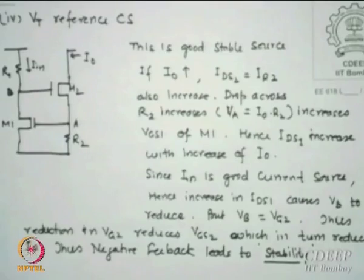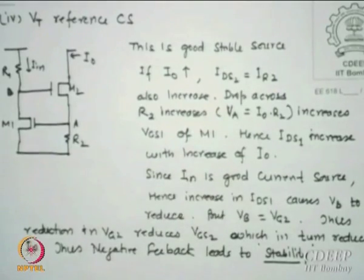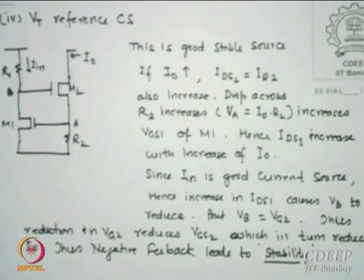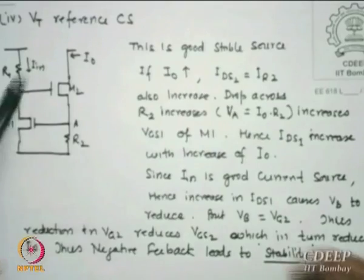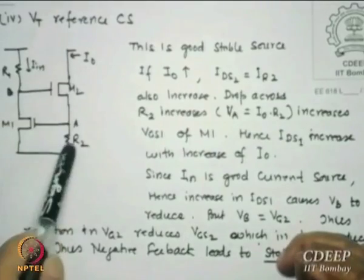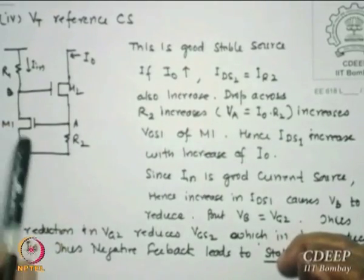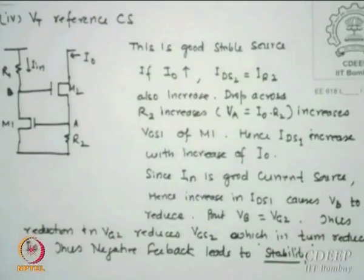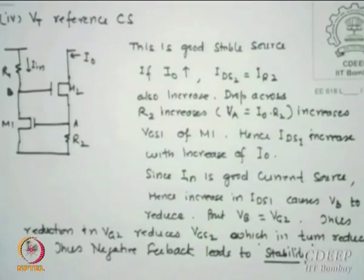Of course, this only shows the approach. Wilson has done the same thing but slightly modified - that is the Wilson mirror. Here we have given an R2 drop which is VGS for the next transistor, and that changes the current in the other arm, feeds back, and keeps adjusting itself. Thus it has stability because of negative feedback.